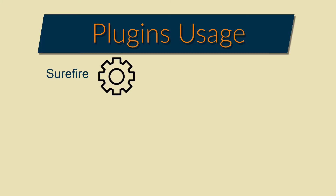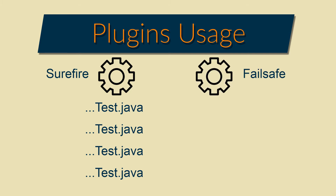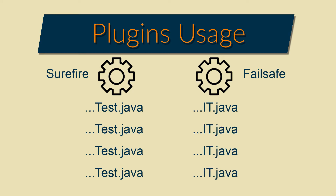How to configure them? I will filter the integration tests in the Surefire plugin to run only the unit tests, because the Surefire plugin is configured by default to run all the tests present in the test rules folder. On the other side, the Failsafe plugin has an already configured filter to run only the integration tests — those ending by IT.java. This way, Surefire is only dedicated to unit tests and Failsafe only to integration tests.